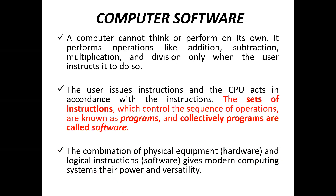A computer itself can't think or understand. It performs operations like addition, subtraction, multiplication, and division only when the user gives instructions to do that particular operation. When there is no interference, the computer will not be able to perform any task. The user issues the instructions and the CPU acts according to those instructions. The CPU releases signals to perform instructions, and the set of instructions which control the sequence of operations is called a program.